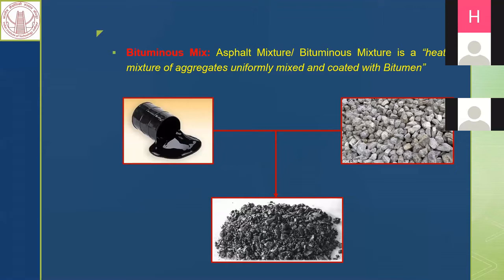Starting with the definition: bituminous mix, also called asphalt mix, is a mixture of heated aggregates uniformly mixed and coated with bitumen. From the definition it is clear that bituminous mix consists of two main components — aggregates and bitumen, also called asphalt binder.